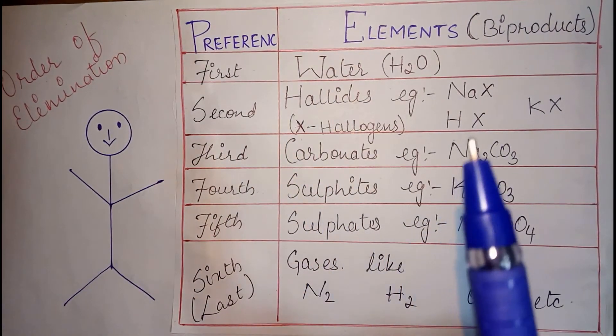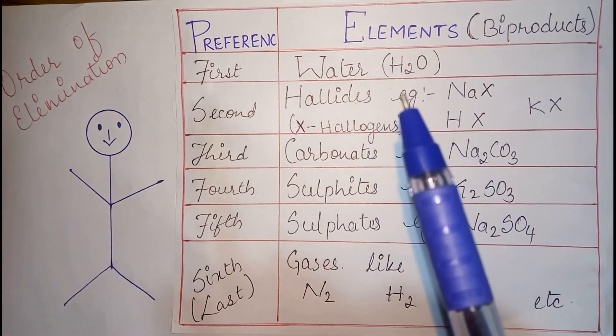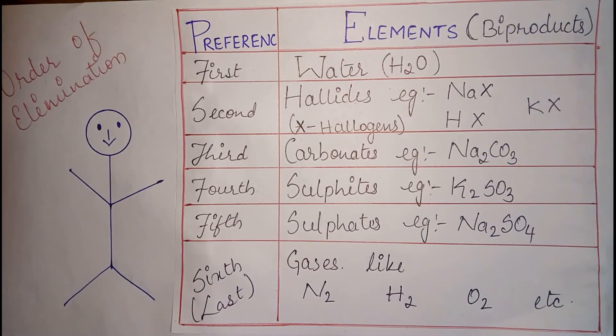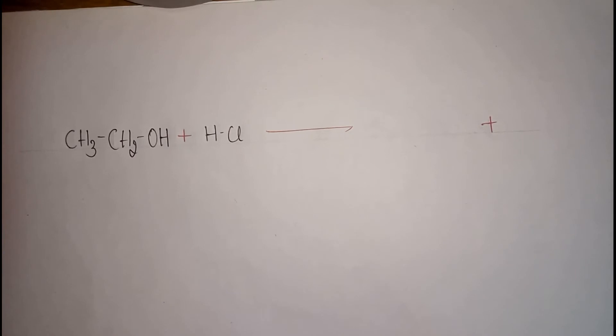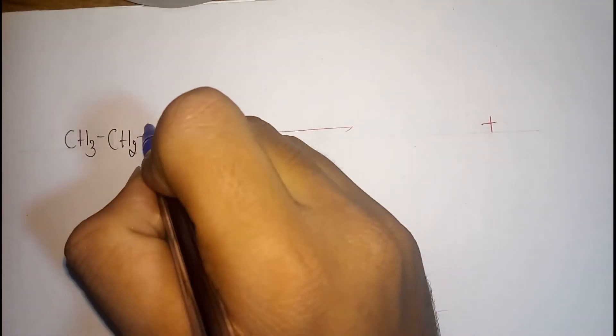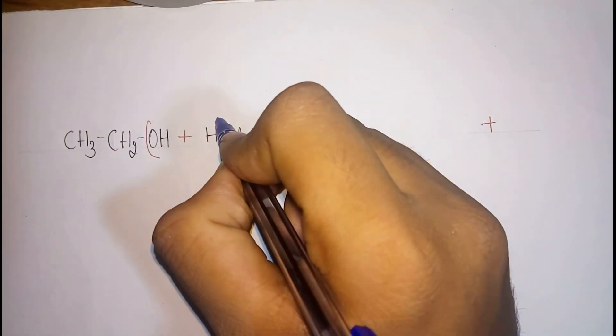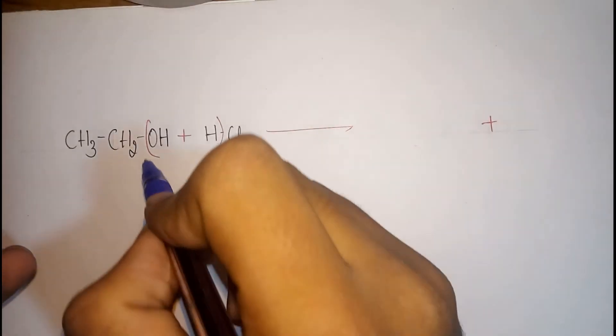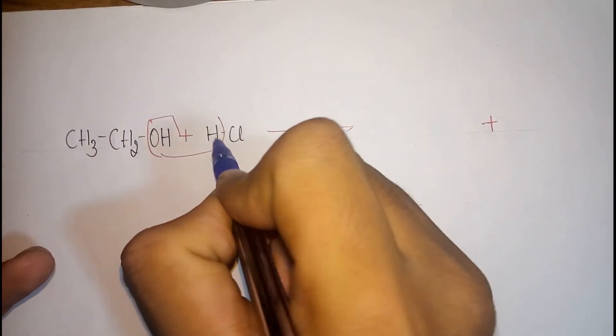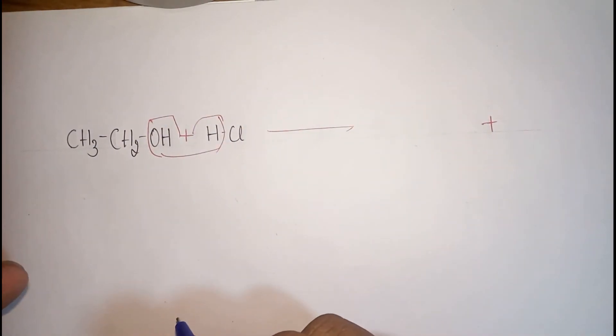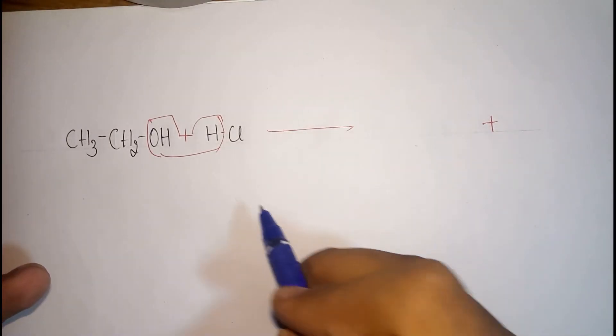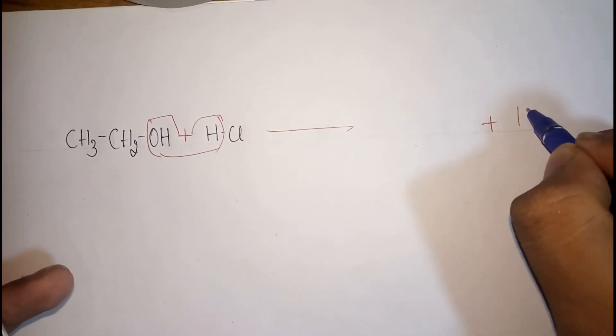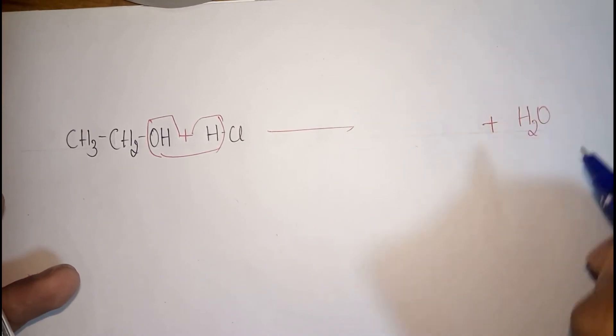Now let us check whether we can find water molecules i.e 2 hydrogen and 1 oxygen molecules at the terminal position or not. Fortunately we find 1 OH and H molecules at the terminal position which gives us water only. Now we came to know that the bi-product is water. Now what we have to do is write H2O i.e. water at the product's side.